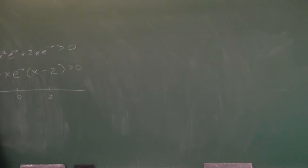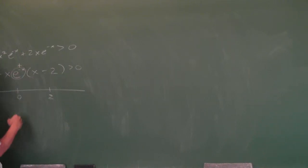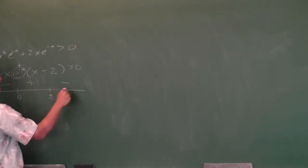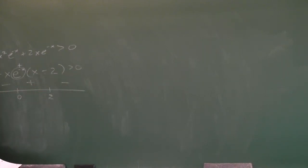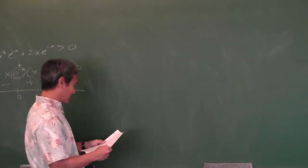Now we make a number line. What makes each factor zero? E to the negative x — what makes that zero? Nothing — e to any power is always positive, so you don't put anything on the number line for that factor. It's always positive. And how do I know it's going to be minus plus minus? The procedure for solving inequalities is always the same: make one side zero, factor, make a number line. And we're looking for greater than zero, so the answer is between zero and two.